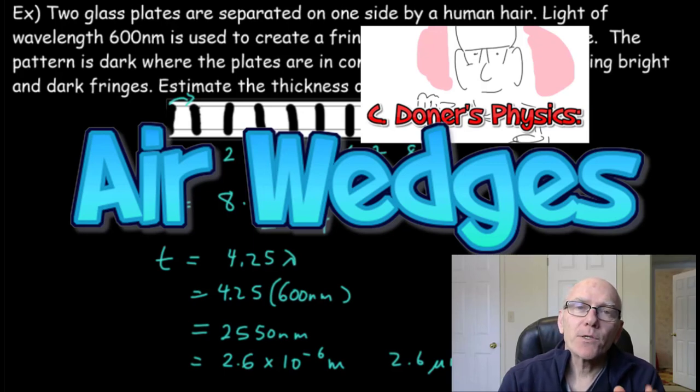Today we're going to have a look at the interference patterns formed within air wedges and how this can be used to measure very short distances.